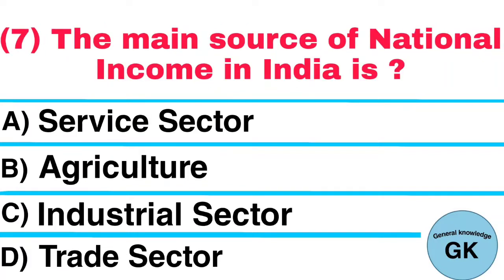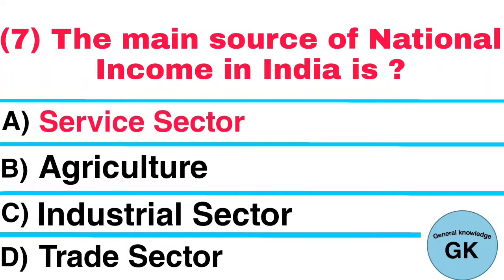Question number 7. The main source of national income in India is: A. Service sector, B. Agriculture, C. Industrial sector, D. Trade sector. Answer: Service sector.